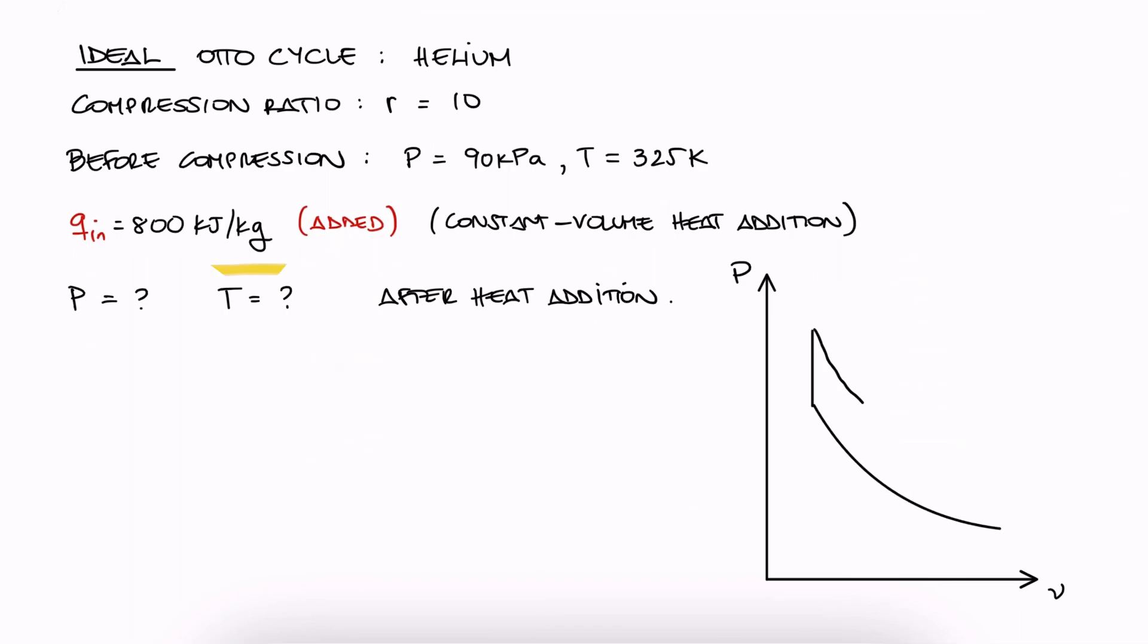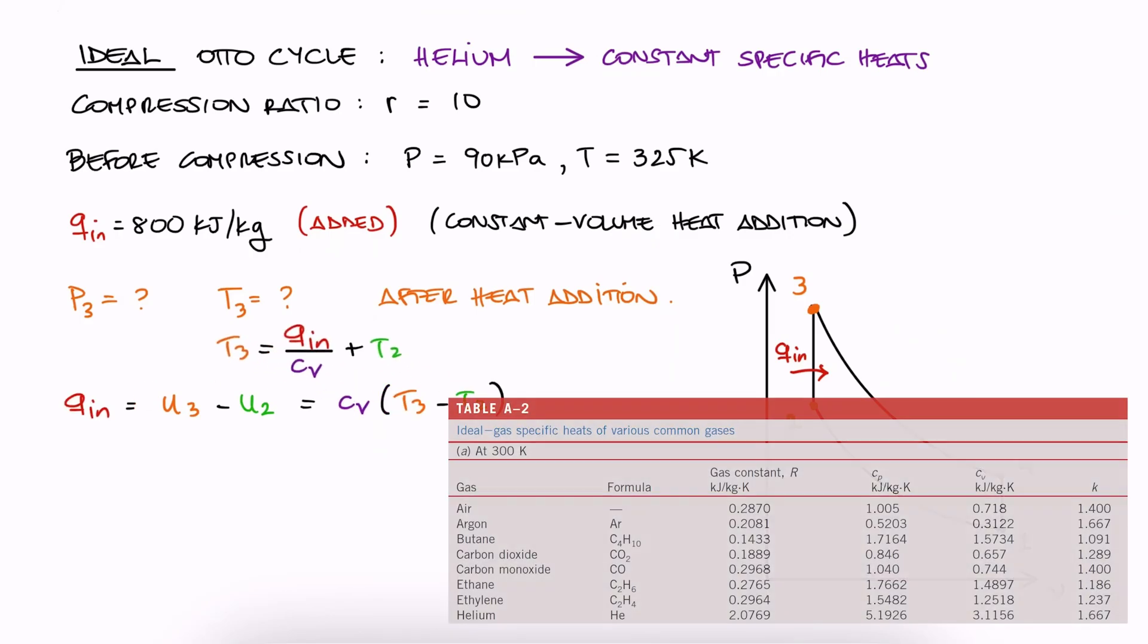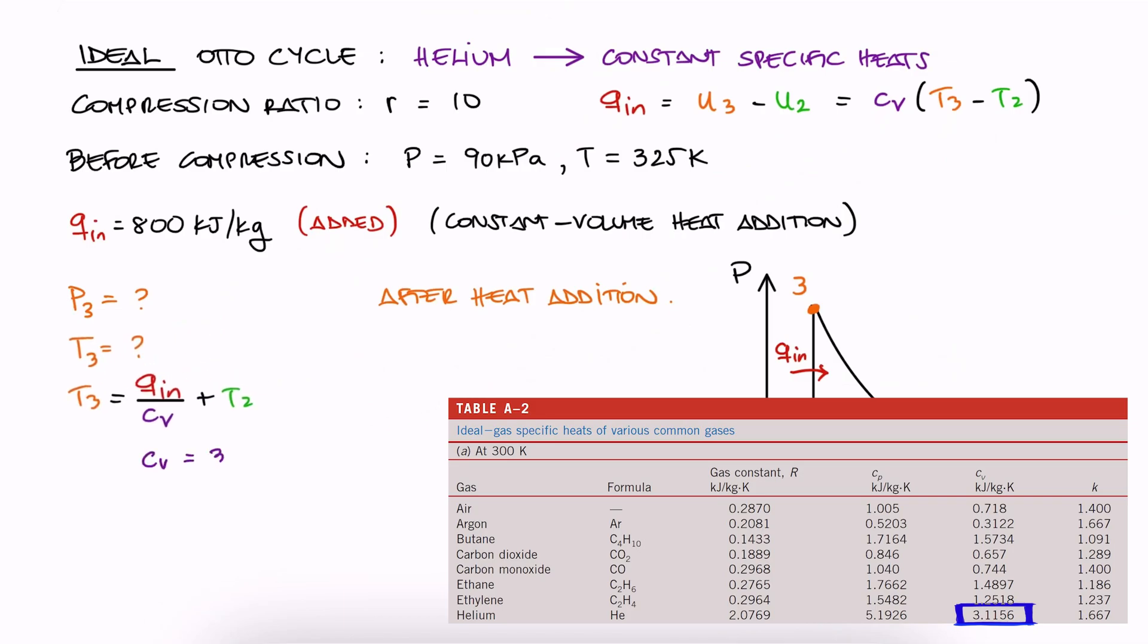Since we're looking for the temperature after the heat addition process and we know how much heat went into the helium, we can write a relationship between the heat state 2 and state 3. Since we are working with helium which has constant specific heats, we can write the specific internal energy in terms of the specific heat at constant volume and the temperatures. Solving for T3, we see that we need to look up the specific heat at constant volume for helium and we need to calculate T2.